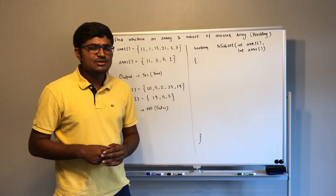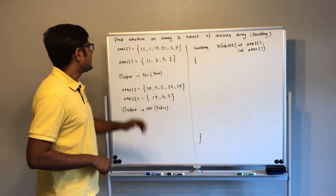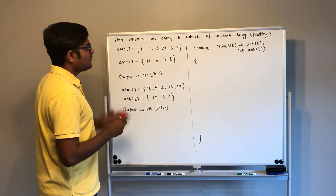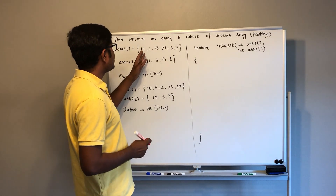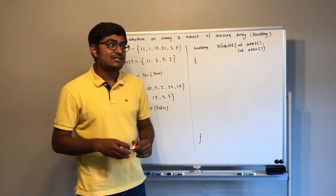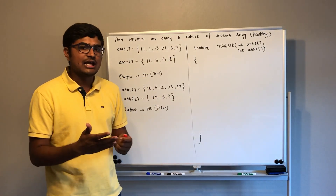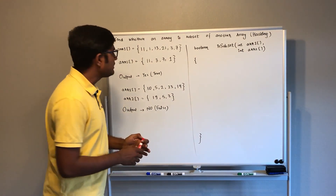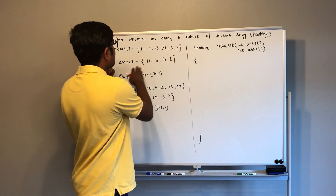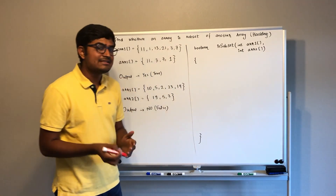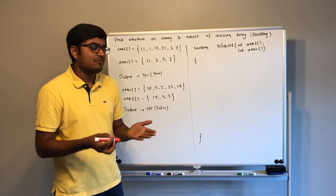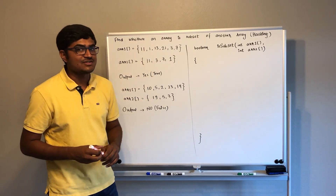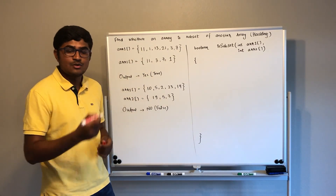How are we going to use this method of hashing? So let's say you are given two arrays. We are going to create a hash set and save all the elements of array 1. As you know, a hash set will only save the unique elements. Once we save all the unique elements of array 1, we will go through all the elements of array 2 and see whether they exist in the hash set or not. If not, then we know that the second array is not a subset of the first array.